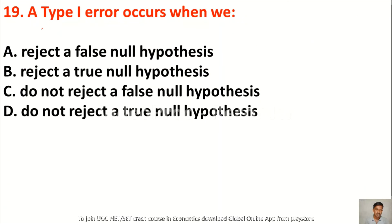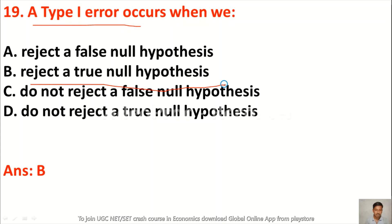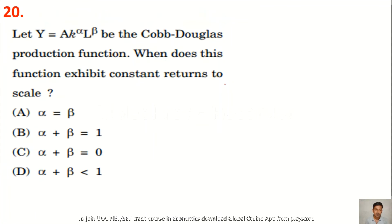Question 19: A type 1 error occurs when we reject a true null hypothesis.